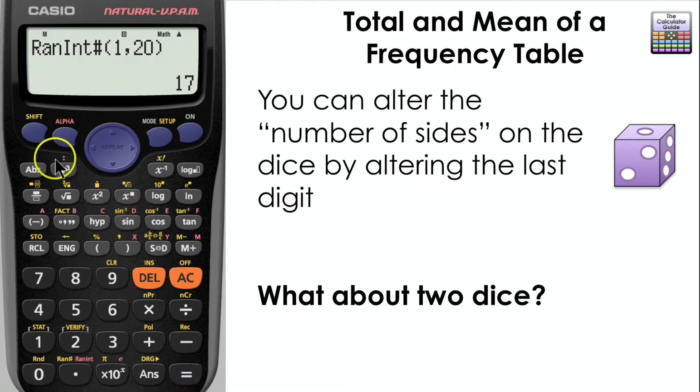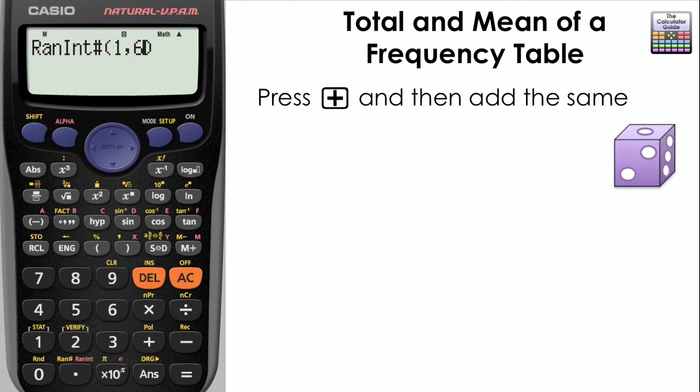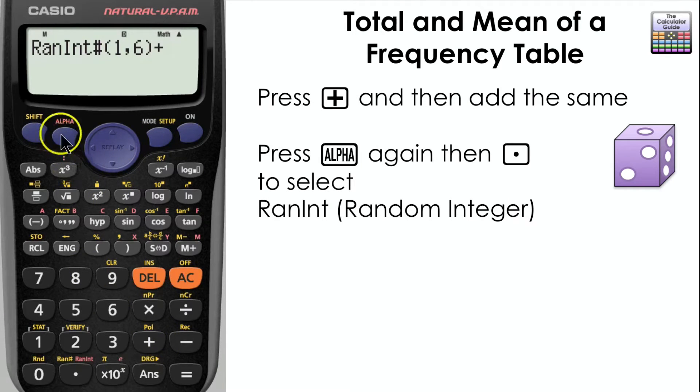What about if you want to roll 2 dice if you've got a game that needs a double roll? I've gone back to change it to a 6-sided dice. And what you need to do is just add, so press plus, and then just do the same again.